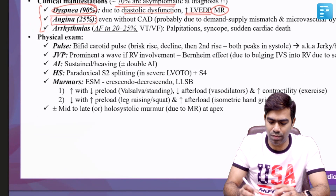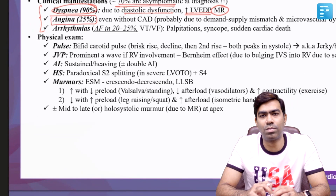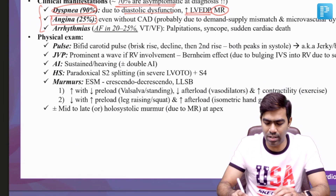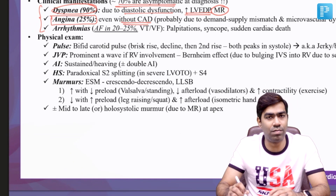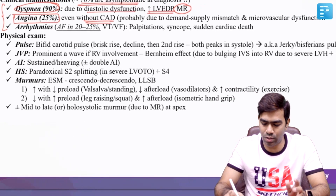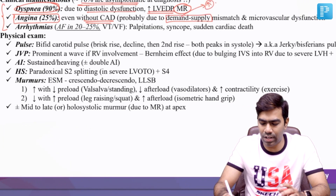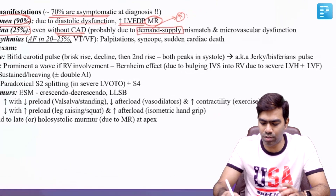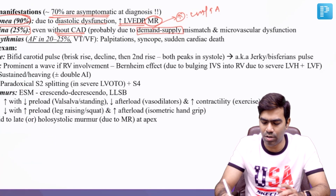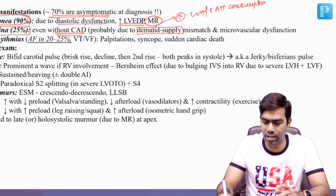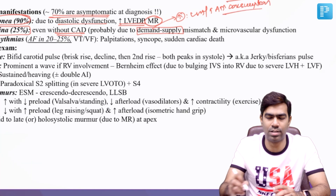One fourth of symptomatic patients will have angina. Angina can happen even without coronary artery disease, usually due to demand-supply mismatch. Patients tend to have very high demand because of left ventricular hypertrophy itself and increased ATP consumption due to increased myosin-actin cross-links at resting state.